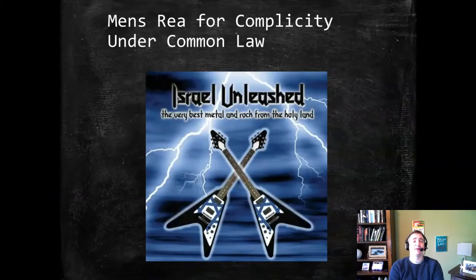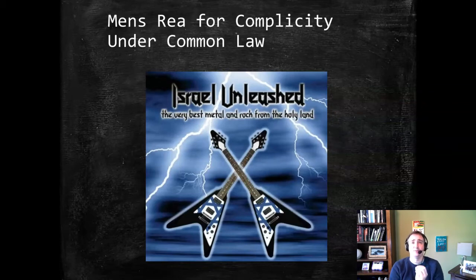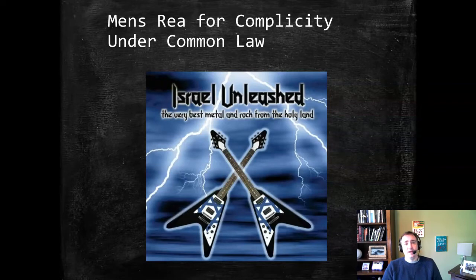I'm going to talk about mens rea for accomplice liability, since as I mentioned last time, the act requirement isn't much of a bar for prosecution. Mens rea is going to have to be our dividing line in many cases for whether or not a person is responsible for the actions of another in the form of accomplice liability, aiding and abetting.